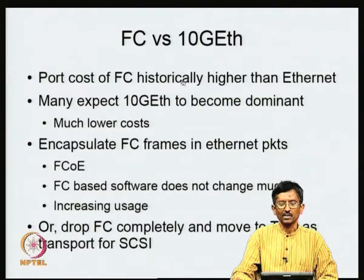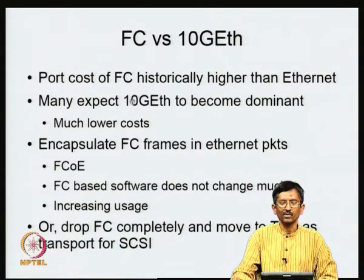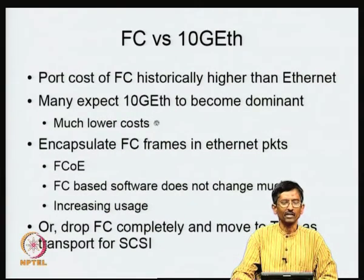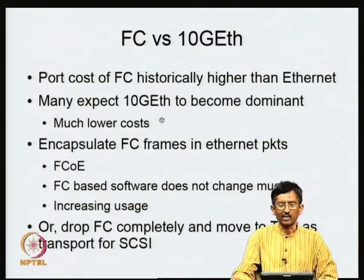Generally people believe that from 1 Gigabit Ethernet to 10 Gigabit Ethernet, when the transition happens, it will become very low cost. Therefore, everybody is thinking that if there is a way to lower the cost of storage, you might have to move to something like 10 Gigabit Ethernet. Of course, 10 Gigabit Ethernet is already quite strong in the core part of the Internet, but in a departmental setting it is still not that common.